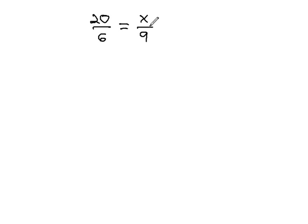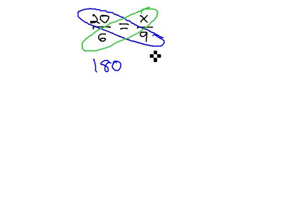The cross product, we should recognize as saying that if we multiply the diagonals, 20 times 9 is 180, and the other diagonal, 6 times x to get 6x, we'll get an expression that is equal.